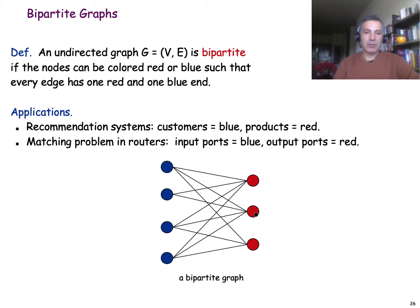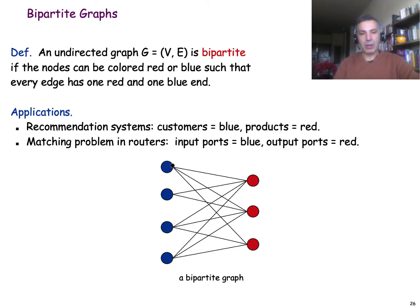Recommendation systems such as those used in Amazon or Netflix have all the users or customers on one side of the graph, and all the products or movies on the other side. Every time someone buys a product or likes a movie, there is an edge from that user node to those products. We can use a bipartite graph of that sort to identify users that like similar products and make recommendations about other products they may like.